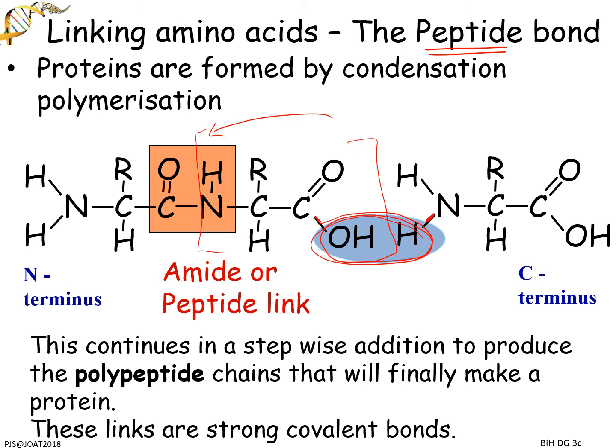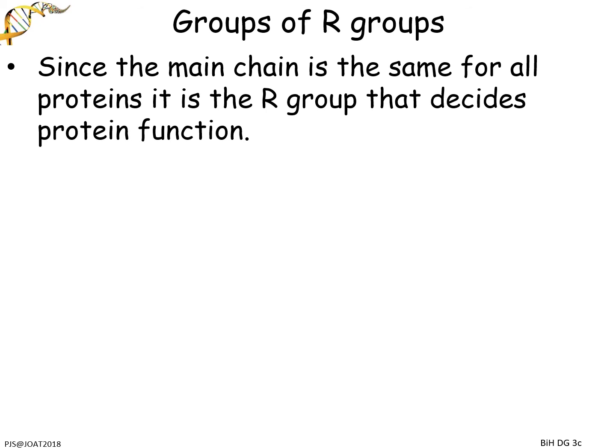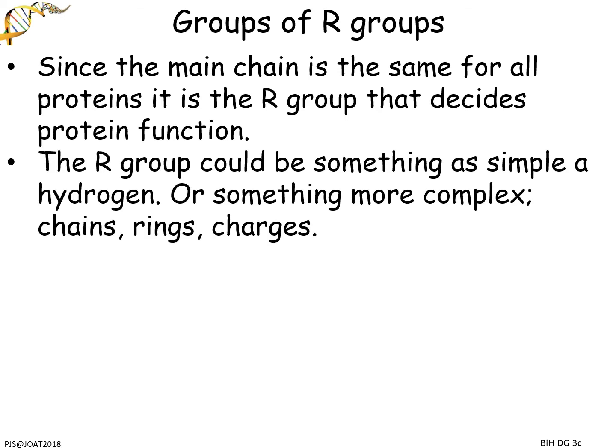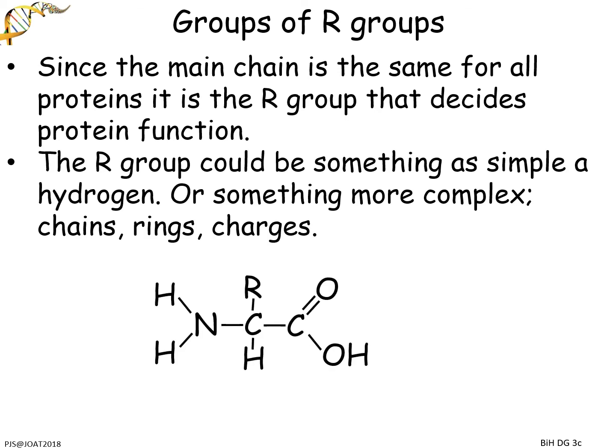The R groups are really important because they decide what's actually going to happen in the protein. Everything else is the same - it's like your DNA, where the sugar-phosphate backbone is the same everywhere, but one bit of DNA codes for something totally different because the sequence is different. The bit that changes is the bases. Same thing here: what's changing is that R group, and it could be simple or a lot more complicated.